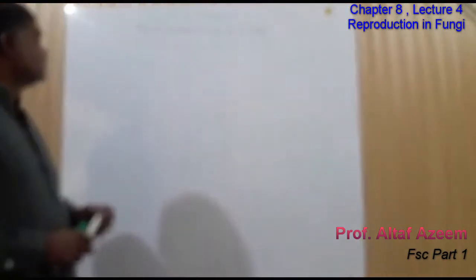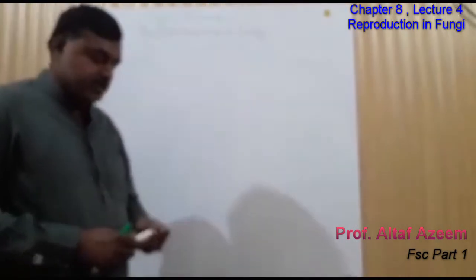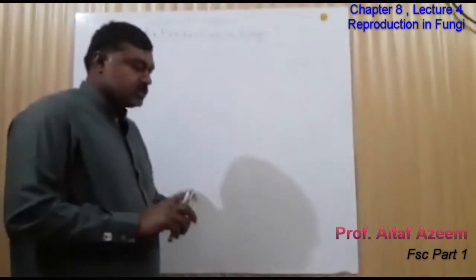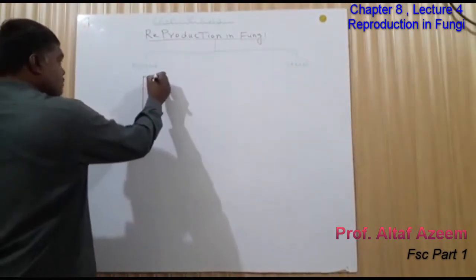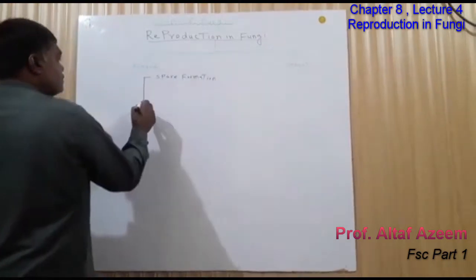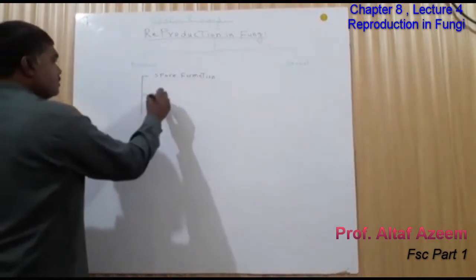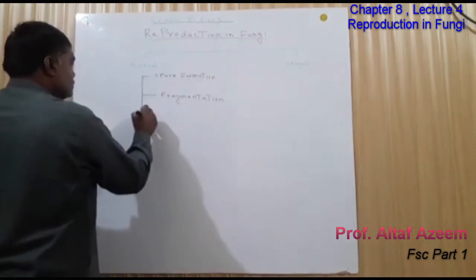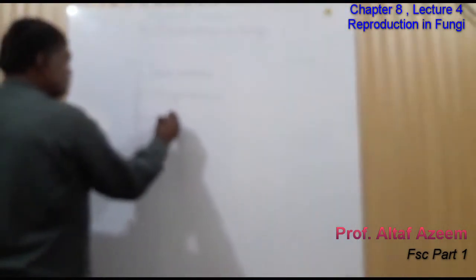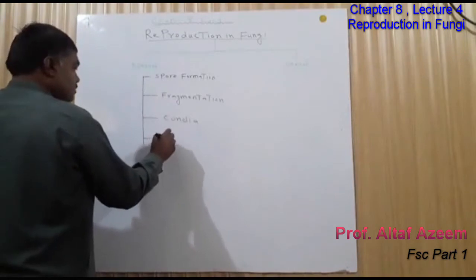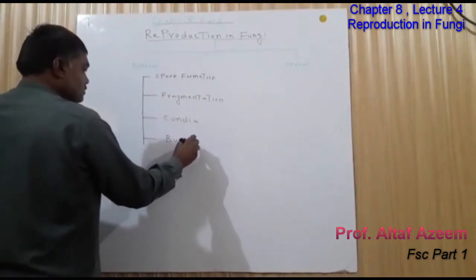First we look at how asexual reproduction in fungi takes place. There are different methods of asexual reproduction in fungi. These are: 1st by spore formation, 2nd by fragmentation, 3rd by conidia formation, and 4th by budding.